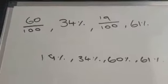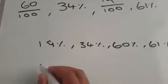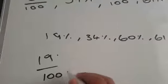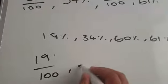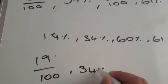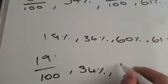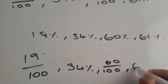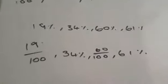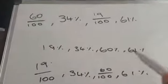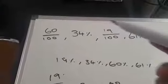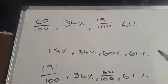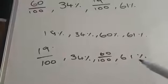So really, coming down again, it's still 19 over 100, 34%, 60 over 100, and 61%. That's pretty much what you should be seeing when you see the 19 over 100 and 60 over 100, but that's not your answer. It is right, but that's how we want your answer.